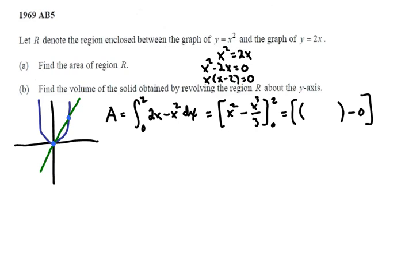We can see that the second expression will be 0. The first one is 4 minus 8 thirds, which turns out to be 4 thirds. That's part A, finding the area of region R.